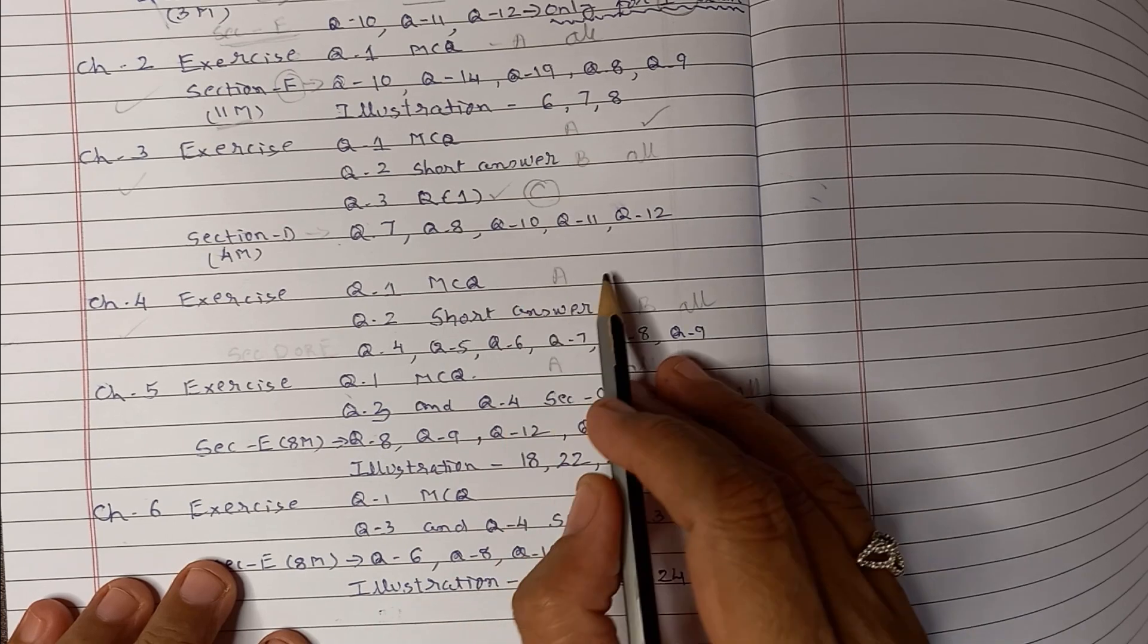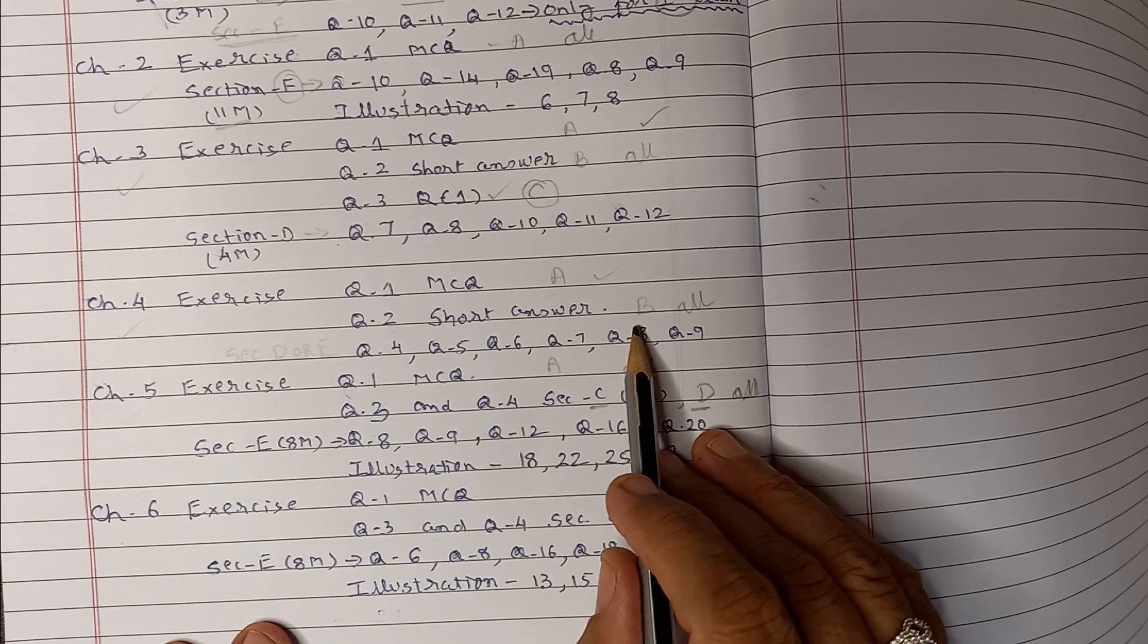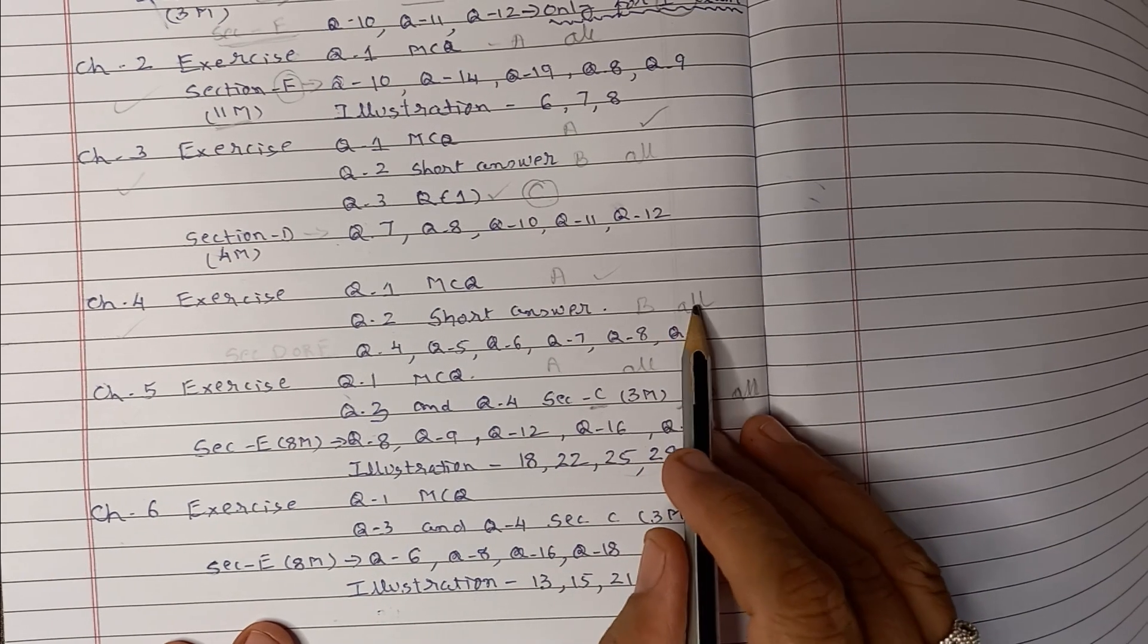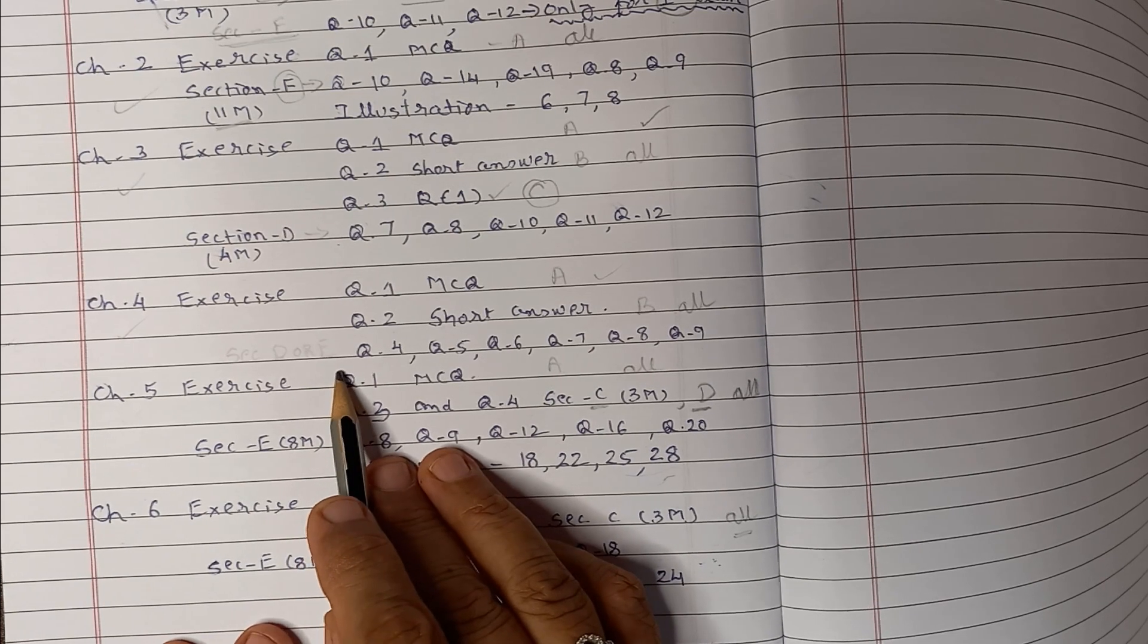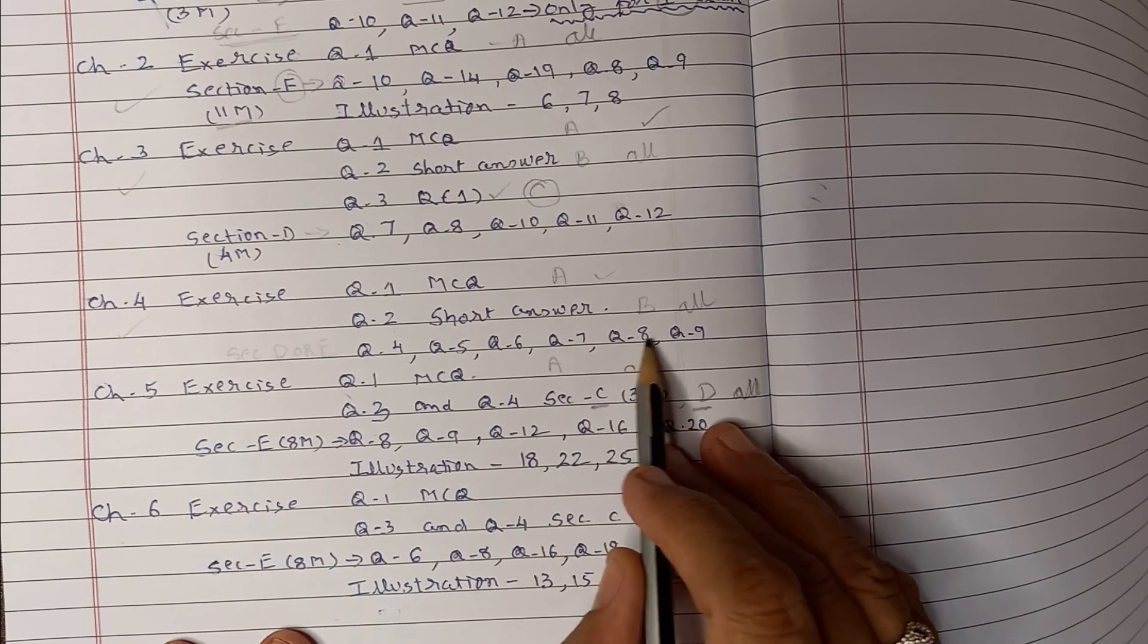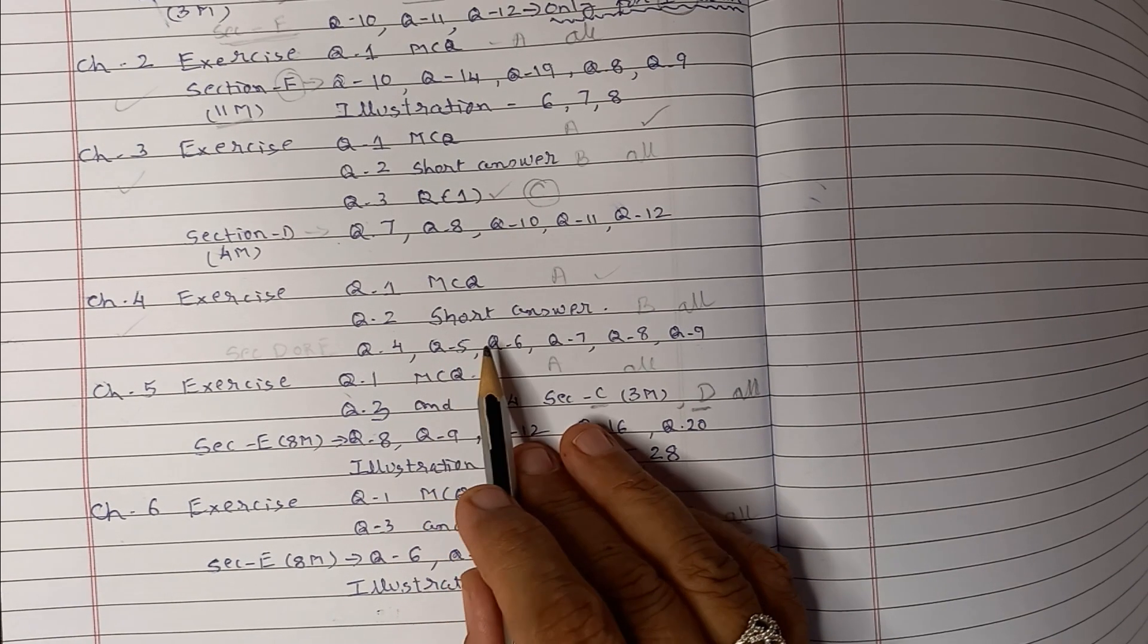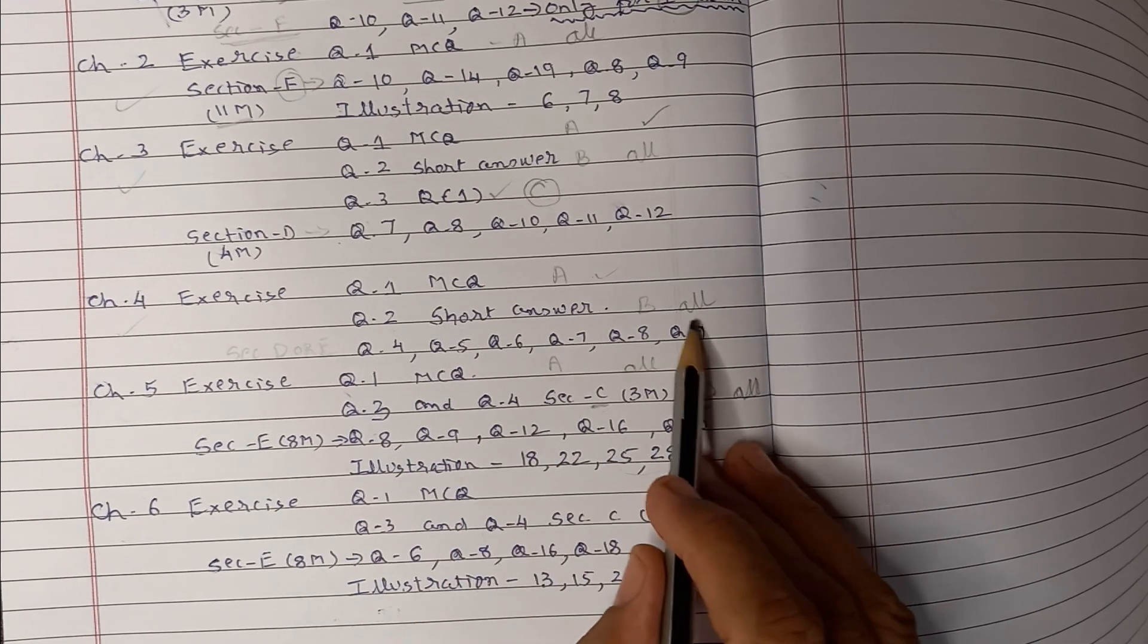Fourth chapter exercise, in that you have question 1 MCQ has to be done. Question 2 short answer for the B section, all short answers to be done. That is of your reconstruction, mainly this chapter is for theory also. Then for the D section or E section they may ask questions like 4, 5, 6, 7, 8, 9, means preparation of the journal entries to be written, new balance sheet to be done, and the revaluation account to be done. So that question you have in this particular exam, first exam for the reconstruction.